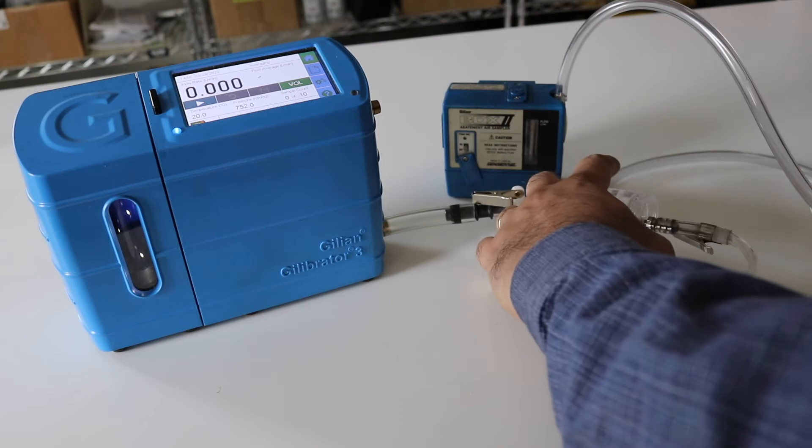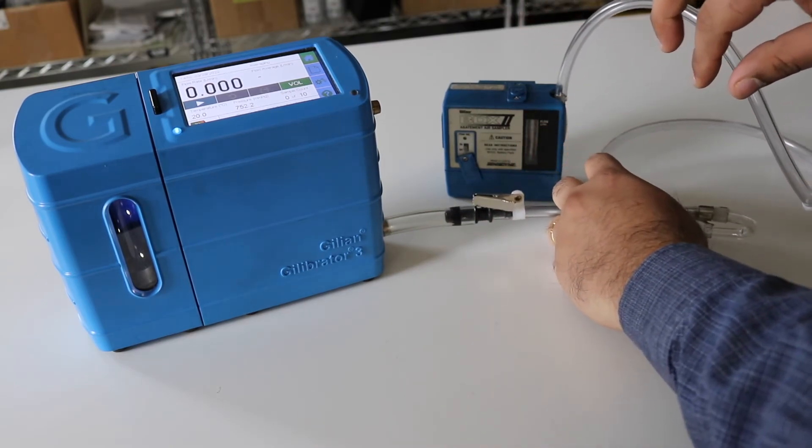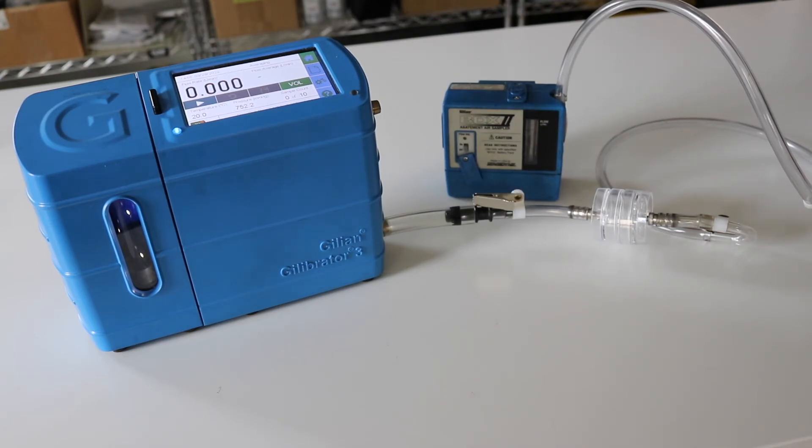Ensure that the filter side of the cassette is facing the sampling pump. The sample train should be set up using the same cassette and pump that will be used to collect your sample.